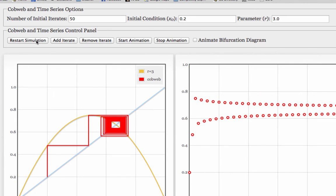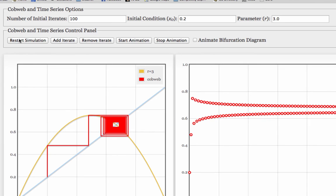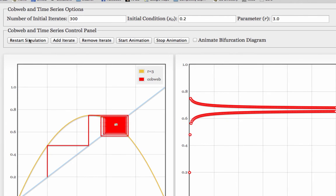Here's 3.0. When I only plot 50 iterates, it's not clear whether or not this is converging. So let me plot some more. That's 100 iterates. That's 300 iterates. It looks to me like this is still converging down to the fixed point.